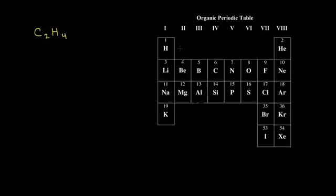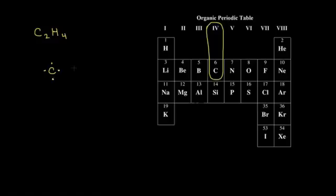We start the same way we did in the last video. To draw the dot structure for C2H4, I find carbon — carbon is in group four, so it has four valence electrons. I'll put in one carbon with four valence electrons, and I know I have another carbon in my dot structure, which also has four valence electrons. So immediately I can see there's going to be a single covalent bond between my two carbons.